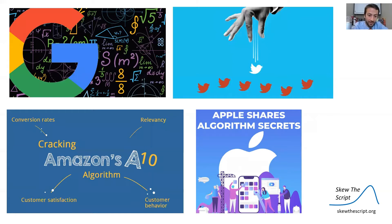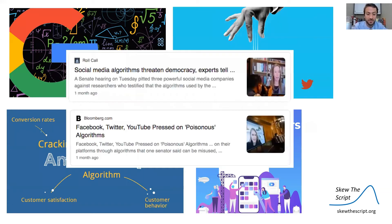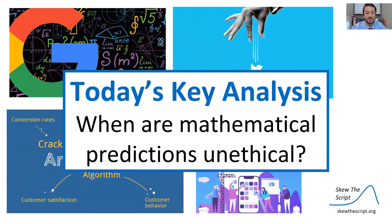You've probably heard of these companies. They all use some form of prediction, algorithms, and regression for a variety of their business practices. However, sometimes these can be controversial, and various articles have been written about how different algorithms can threaten democracy and be harmful to society in general. So today's key analysis centers around when and why mathematical predictions and algorithms can potentially be unethical.